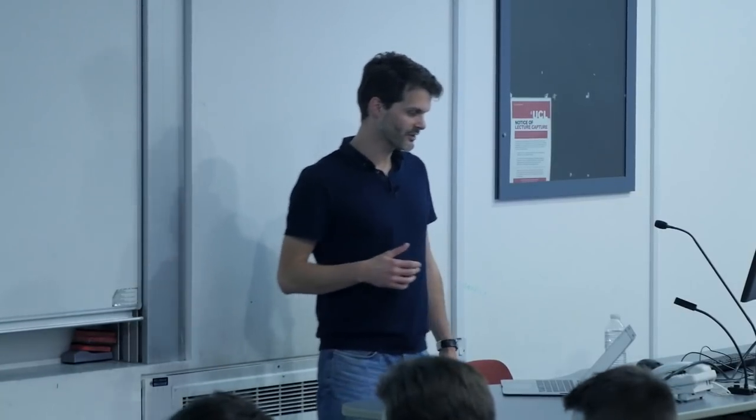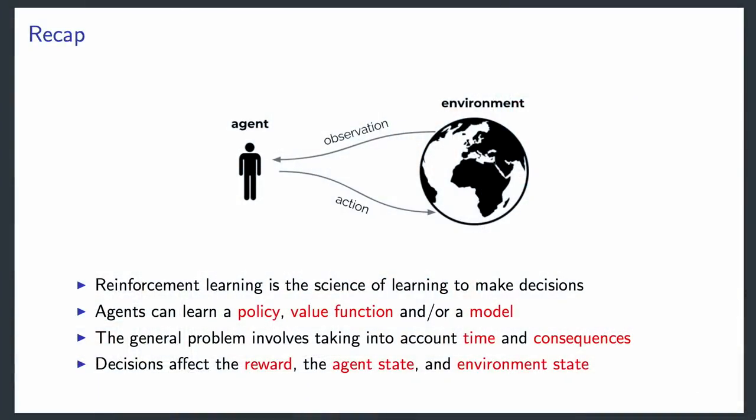Just to recap quickly: in the reinforcement learning setting, agents can learn a policy, a value function, or a model. This lecture will focus on how to learn the value function specifically. In general, we're interested in the full sequential problem, including consequences over time and how to deal with that.